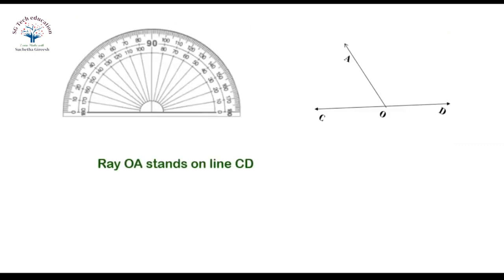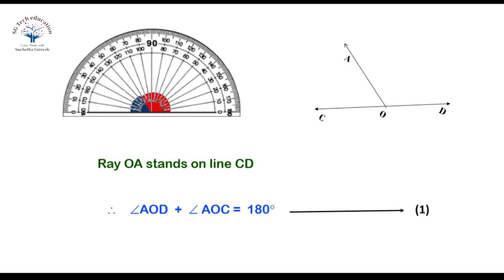Now ray OA stands on line CD forming two adjacent angles. Angle AOC plus angle AOD equals 180 degrees. Recall the linear pair axiom which says if a ray stands on a line, then the sum of two adjacent angles so formed is 180 degrees.